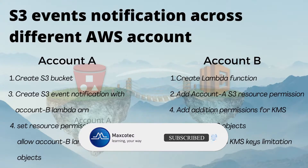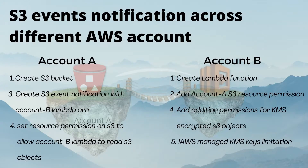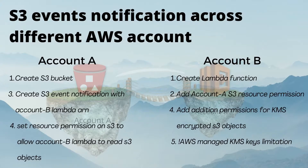The steps we are going to follow are: first, we'll create an S3 bucket in Account A and a Lambda function in Account B. Then in Account B we'll add Account A's S3 bucket resource permission. After that, in Account A we'll create an S3 event notification with Account B's Lambda function ARN. This will have S3 event notifications set up to trigger Lambda on Account B.